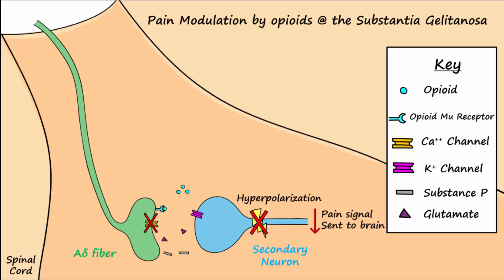Opioids also bind to opioid mu-receptors in the membrane of the cell body, or dendrites, of secondary neurons, and cause opening of potassium channels. This also leads to hyperpolarization of the secondary neuron and a decrease in axon potential frequency in the secondary neuron, causing less pain signals to be sent to the brain.